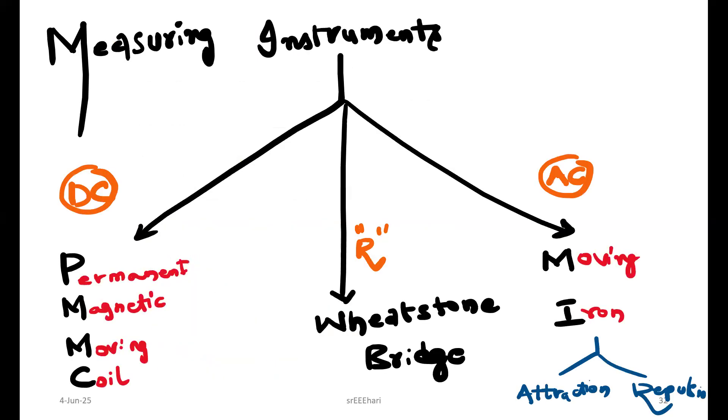Coming to different measuring instruments. In order to go for AC supply and DC supply, we have two different instruments. PMMC is for DC supply. For AC as well as DC, we can use moving iron. In that moving iron, we have attraction and repulsion types.